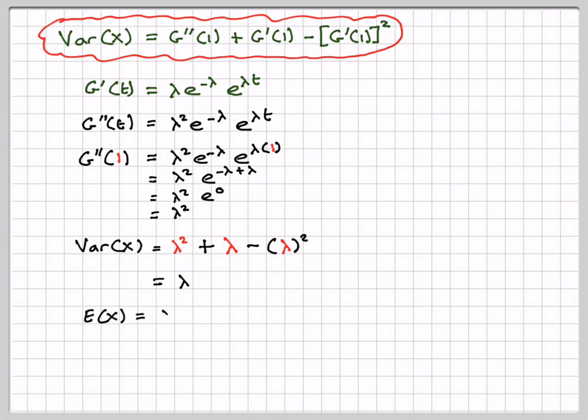So E[X] equals λ and the variance of X equals λ, as expected.